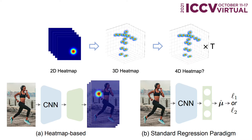But conventional regression methods suffer from inferior performance in pose estimation. In this work, we look into this problem and propose a brand new regression paradigm. With our method, regression can obtain better performance than heatmap.